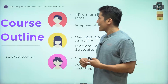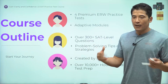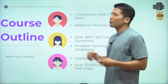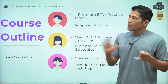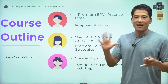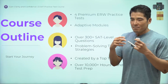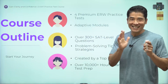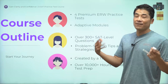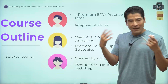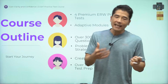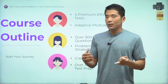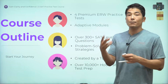This course consists of four premium ERW practice tests. It doesn't include any math section tests — that's beyond my scope of knowledge. So I stayed in my comfort zone and made four practice tests for the evidence-based reading and writing sections. This course also contains adaptive modules — just like the SAT, you'll have an easy version and a hard version for module two, depending on how you do in module one.